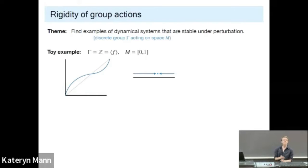Now, stability and perturbation can mean different things. To illustrate this, I'm going to show you the babiest example, where my group is an infinite cyclic group. So I just have to tell you what a generator is doing, and my space is the unit interval.